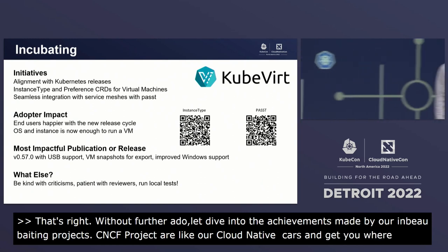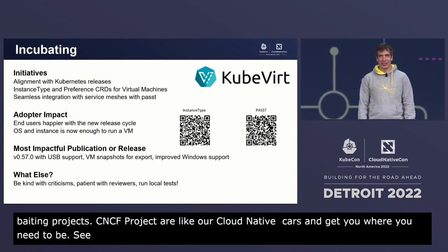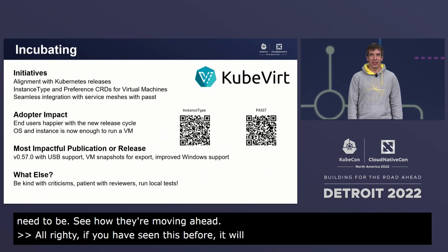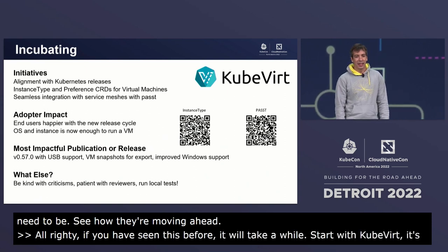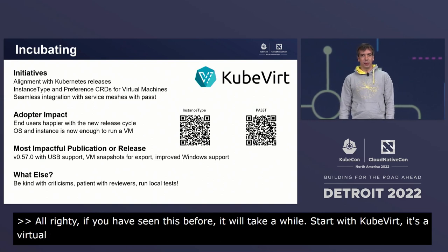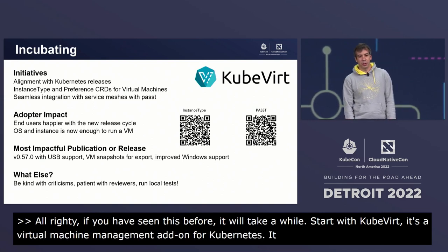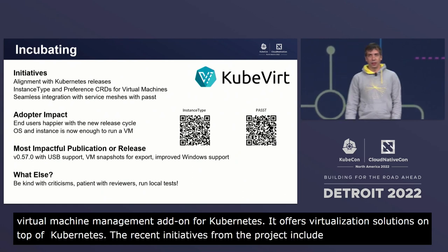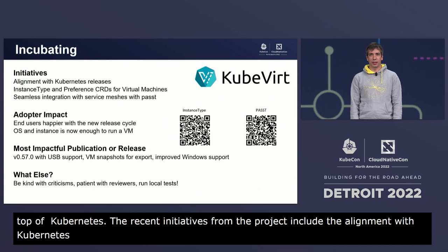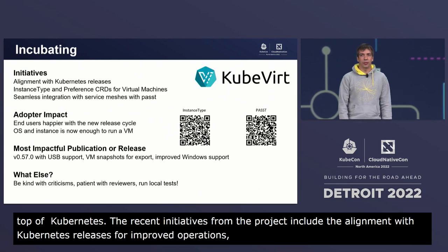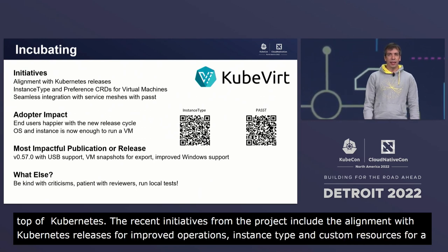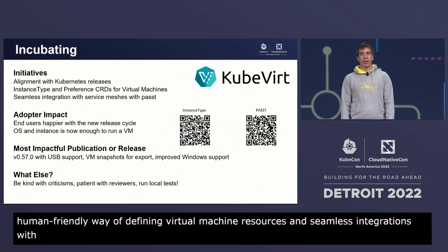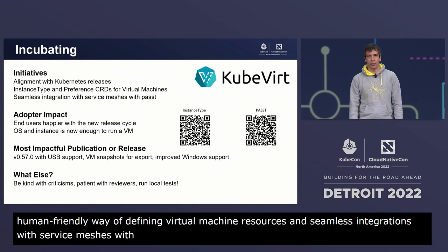Let's start with KubeVirt. KubeVirt is a virtual machine management add-on for Kubernetes — it offers virtualization solutions on top of Kubernetes. Recent initiatives from the project include alignment with Kubernetes releases for improved operations, the introduction of instance type and preference custom resources for a human-friendly way of defining virtual machine resources, and seamless integration with service meshes with Passt, a new user mode network binding that can connect VMs to pod networks.